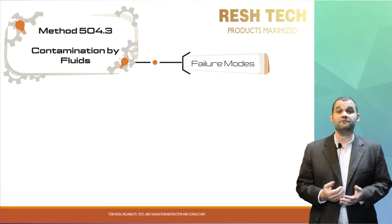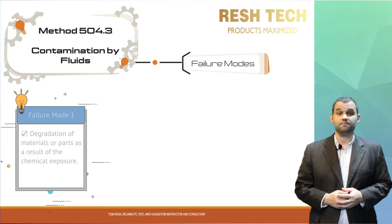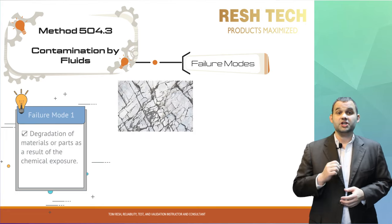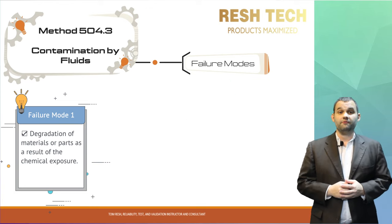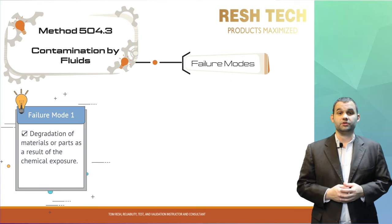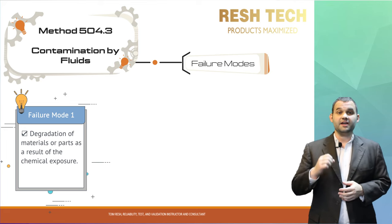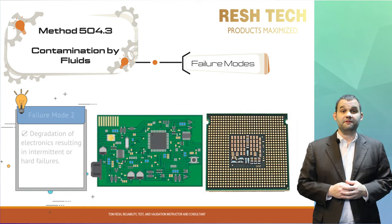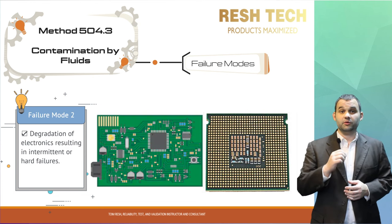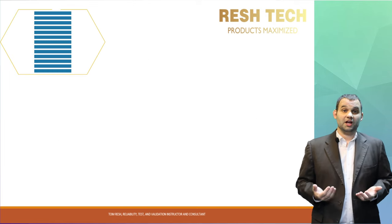Let's cover contamination by fluid failure modes. The first potential failure mode is major degradation or damage to a system's materials. Chemicals can cause materials to crack, shatter, lose sealant, warp, or melt if the material is not compatible with or has a reaction to foreign chemical contaminants. Also look out for chemical incompatibilities with coatings — a coating on a metal substrate to prevent corrosion can crack, flake off, or melt when exposed to an incompatible chemical. Another failure mode is causing electronics to fail or lose conductivity as a result of chemical corrosion, causing undesired intermittent or hard failures.